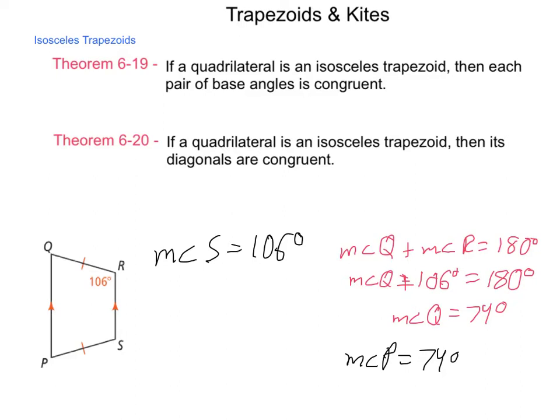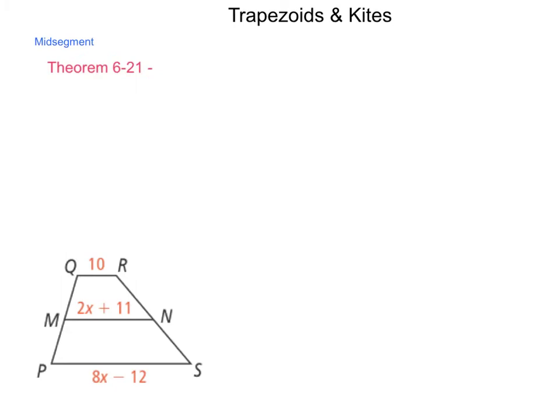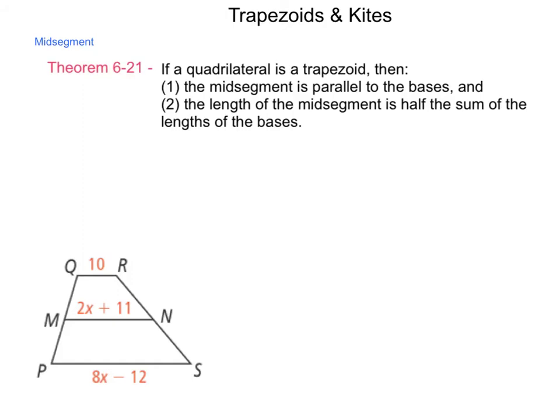Recall we had a midsegment theorem when working with triangles, and the midsegment theorem for trapezoids is roughly the same. Theorem 621 tells us if a quadrilateral is a trapezoid, then the midsegment is parallel to the bases, and the length of the midsegment is half the sum of the lengths of the bases.